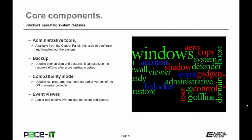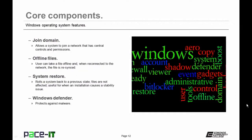All versions have an Event Viewer so you can check system logs for errors and events. Some versions allow you to join domains, which offers much better networking than workgroups. Offline files are also available in some versions.